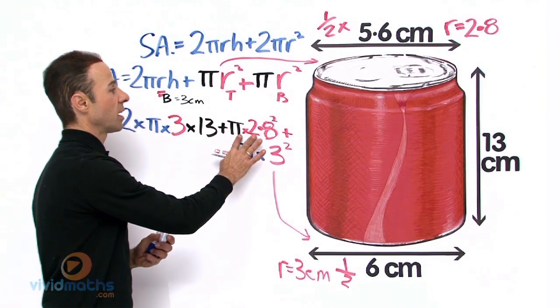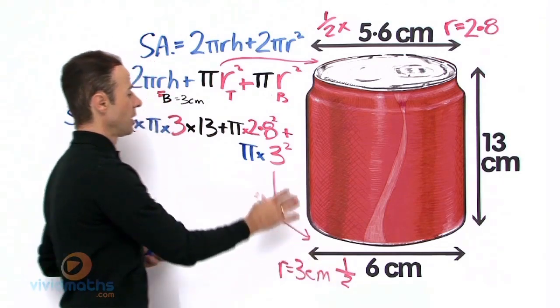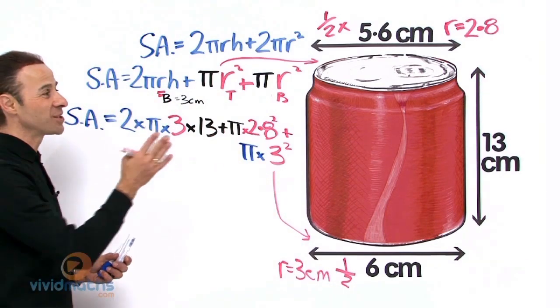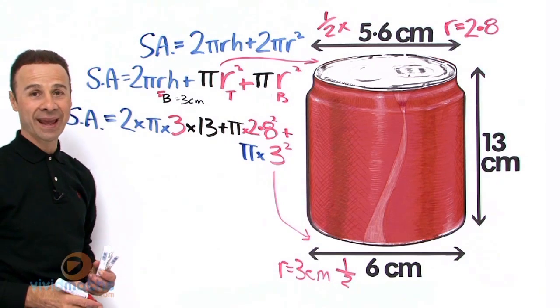So πr² we have the top, and πr² we have the bottom. All we need to do is put that all in the calculator and come up with the complete entire surface area for that can right over there.